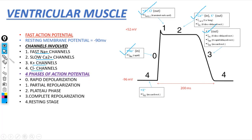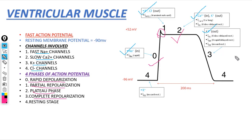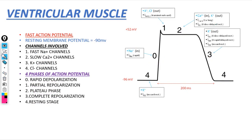Four phases of action potential. Phase 0 is known as Rapid Depolarization. Phase 1 is Partial Repolarization. Phase 2 is the Plateau phase. Phase 3 is Complete Repolarization. Phase 4 is the Resting stage, representing the resting membrane potential.